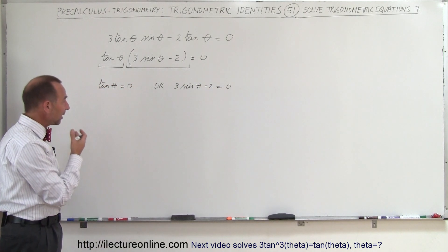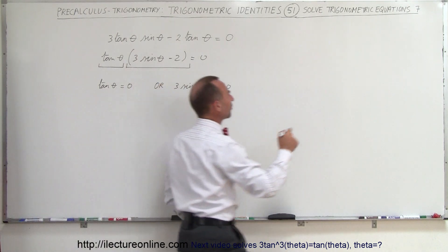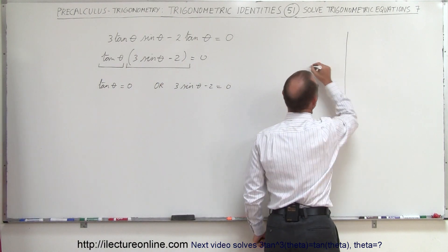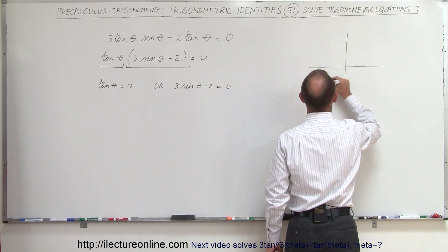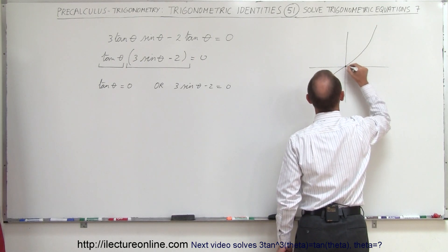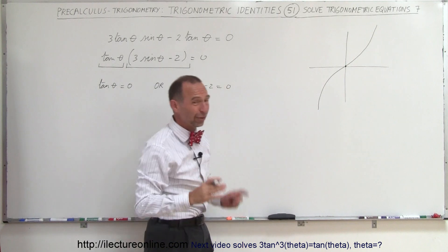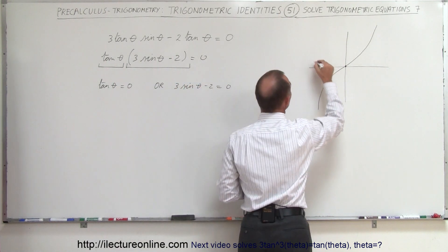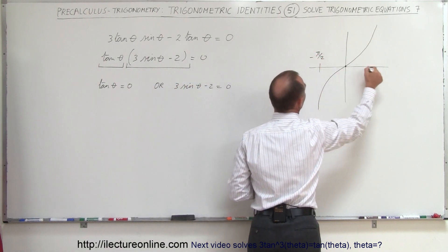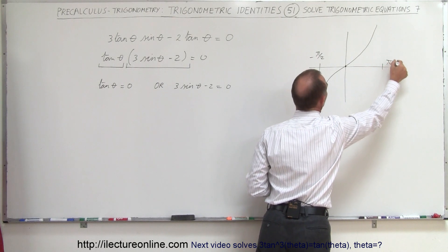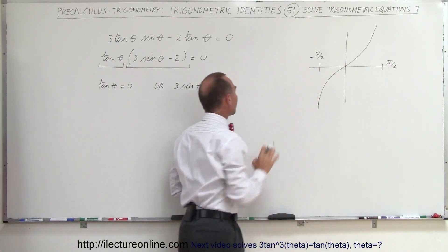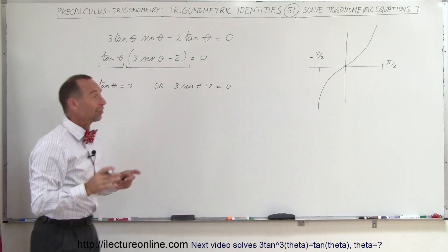The tangent of theta equals zero. If you remember what the tangent of theta looks like when we graph it, it looks like this. You can see there's only one place where the tangent of theta is equal to zero, and of course that's with the limits between minus pi over two and positive pi over two. So that means there's only one place, that's where the angle is zero.